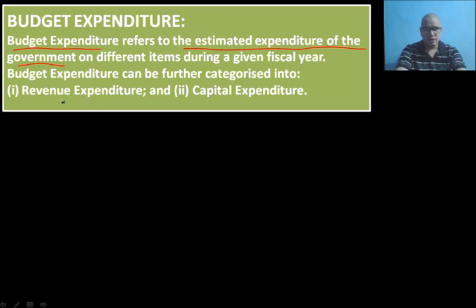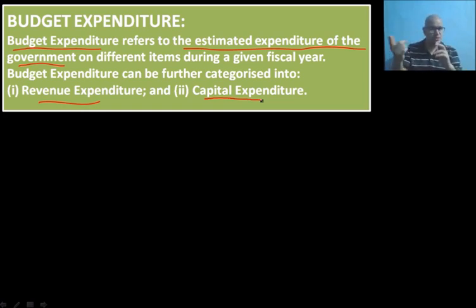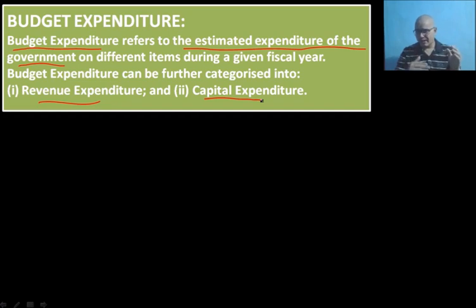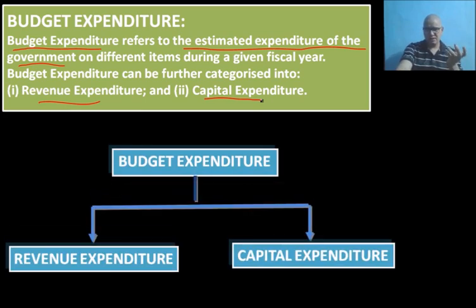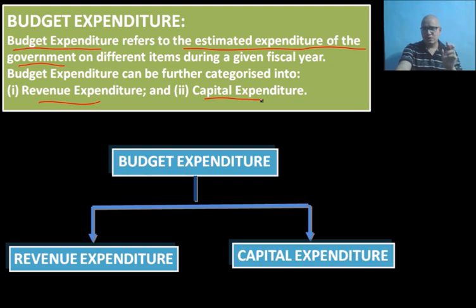Just like revenue receipts and capital receipts in budget receipts, here in budget expenditure we have two categories: revenue expenditure and capital expenditure. Budget expenditure can be categorized into these two parts. Now let us go into detail about what revenue expenditure actually means.